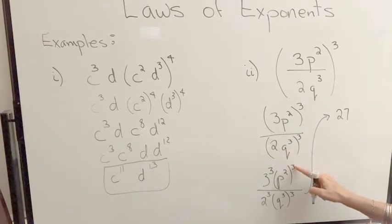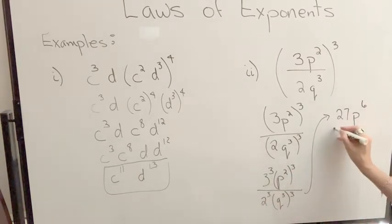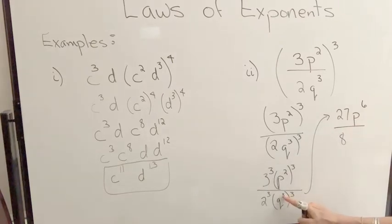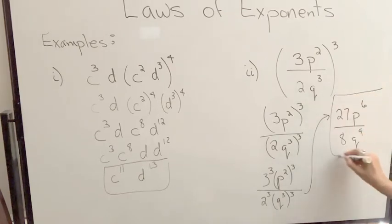Three cubed is 27, p squared, and then cubed, I multiply my exponents, so that's p to the sixth, two cubed is eight, q cubed, we multiply our exponents, it would be q to the ninth, so there's our final result.